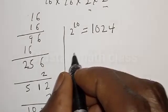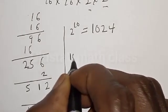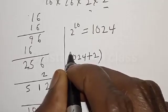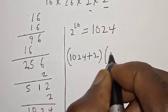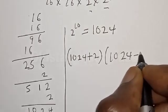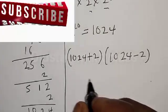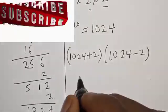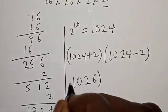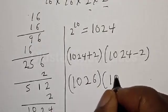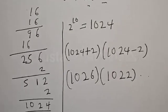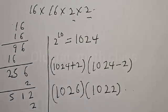Now let's substitute. We have 1024 plus 2, which is 1026, multiplied by 1024 minus 2, which is 1022. Now let's multiply the two together in order to get the final answer.